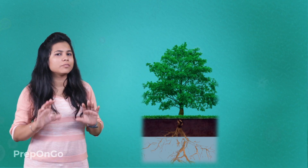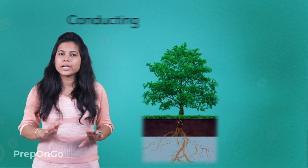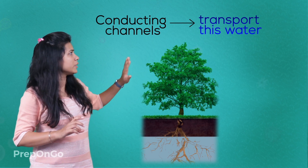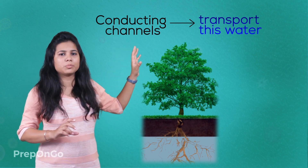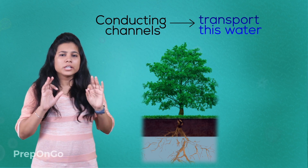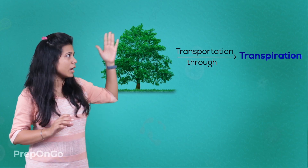The roots have now absorbed water, and through the conducting channels it can transfer water to different parts of the plant. However, sufficient pressure is not developed from the roots to transfer water to taller trees, so another process is involved in water transportation — called transpiration.